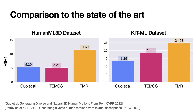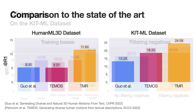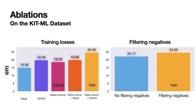We compare TMR with previous work on text-to-motion retrieval benchmarks and display the recall at rank 1. TMR outperforms both Guo et al. and TEMOS by a large margin on both datasets. In ablative experiments, we see that the InfoNCE loss performs better than the margin loss. TEMOS shows reasonable performance even though it was only trained on positive pairs for synthesis and not contrastively for retrieval. Jointly training for both motion synthesis and retrieval performs best, and we also see the improvement of the negative filtering strategy.